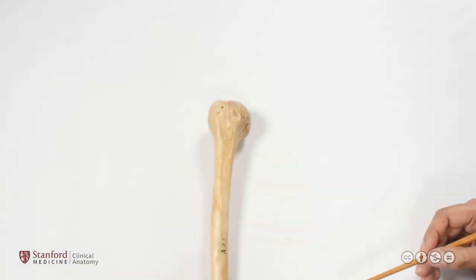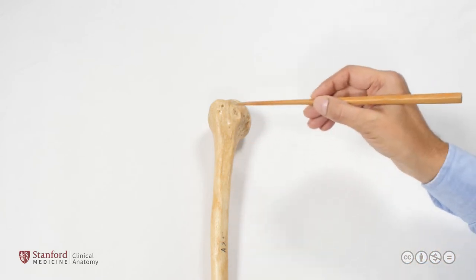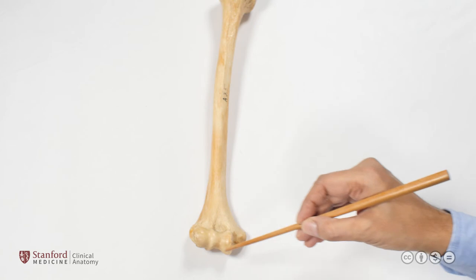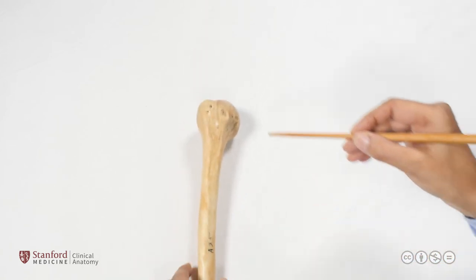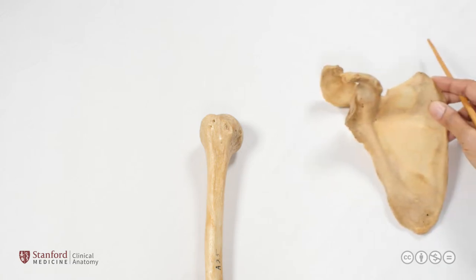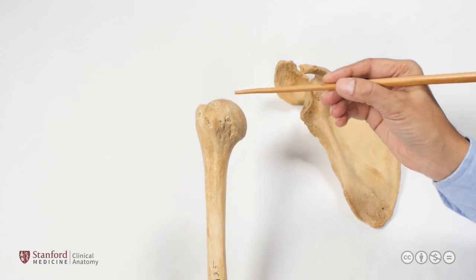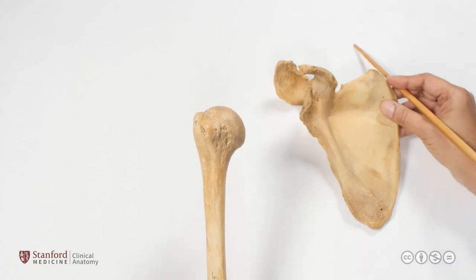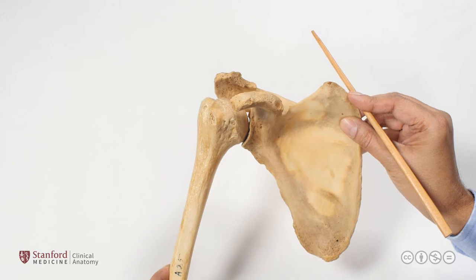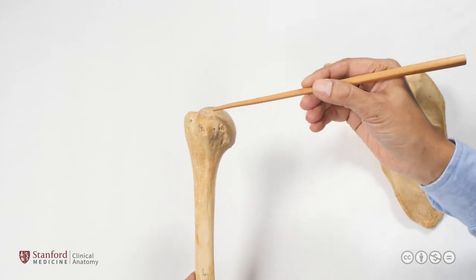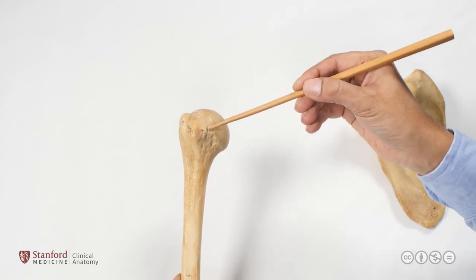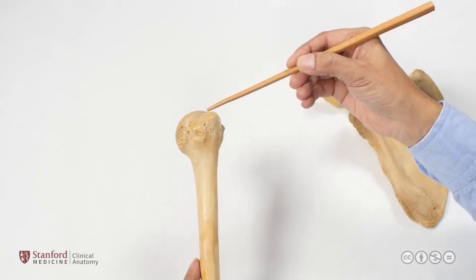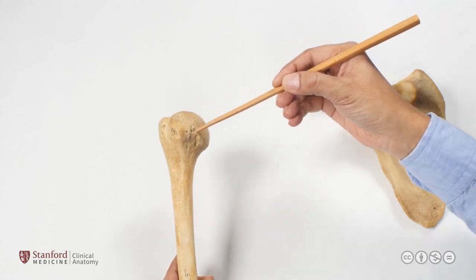Here we have a right humerus, the single bone of the arm. We're looking at the proximal end, which continues down as the shaft and ends distally at the elbow joint. The proximal end articulates with the scapula: this is the hemispherical head of the humerus with its smooth curved surface, articulating with the glenoid cavity. The head is attached to the rest of the bone at the anatomical neck of the humerus, which runs circumferentially all the way around.